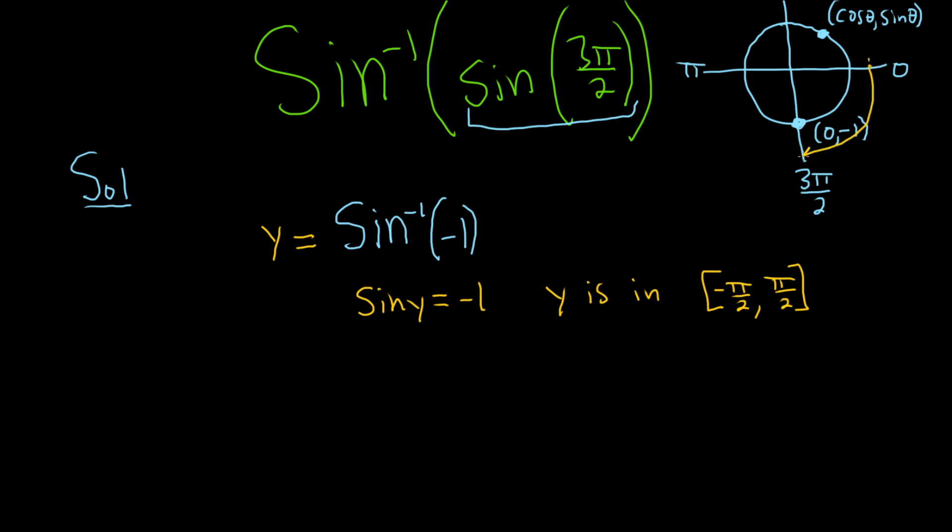This angle here is also known as negative π over 2. So the angle here, and the answer in particular, is negative π over 2. And that's the final answer.